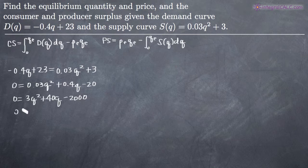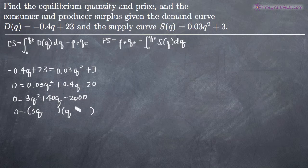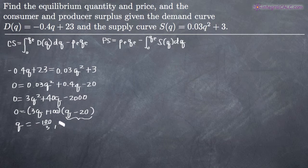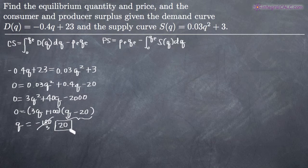Now if we factor this, we'll end up with (3q − 20)(q + 100). Let's see — minus 20 and plus 100 gives us 3q squared minus 60q plus 100q, which is plus 40q, minus 2000. So now we can solve each factor separately for q. Solving 3q + 100 = 0 gives q = negative 100/3. Solving the other factor gives q = 20. Because quantity can't be negative, q = 20 is our equilibrium quantity.